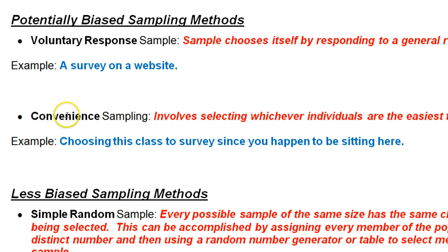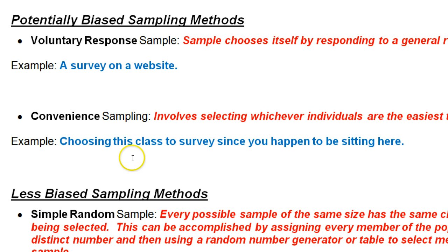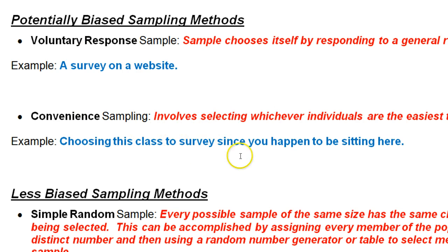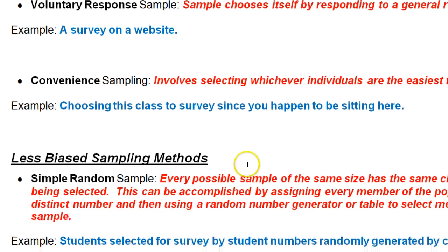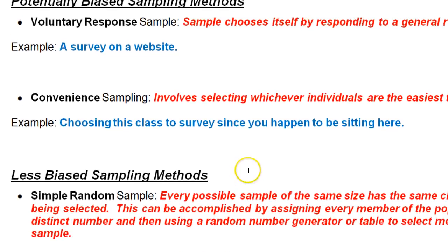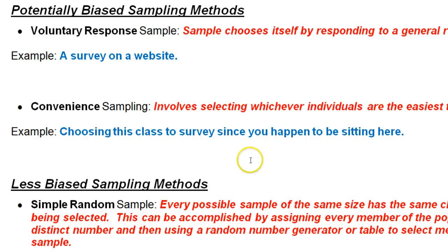The next method is the convenience method, and that's where the person conducting the survey just chooses a group that happens to be nearby. This is often biased because a group that's already sitting together for whatever reason often will have a lot in common.